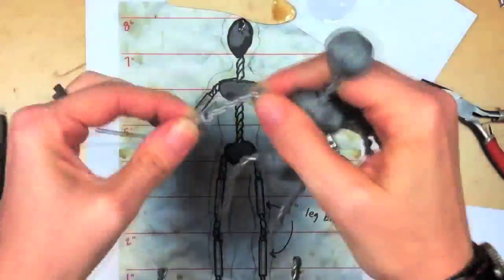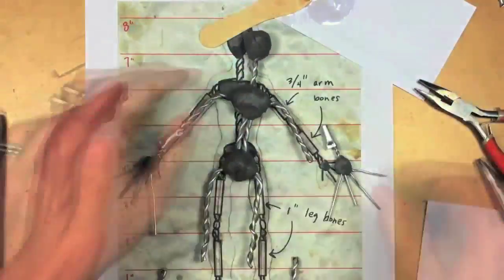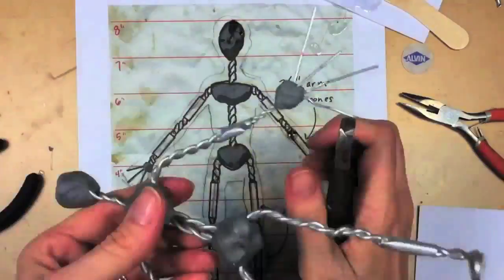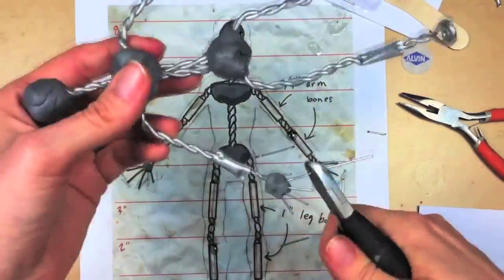You can also install bones on the bicep area of the arms and the thigh area of the legs. You can do this with tubing or epoxy putty, as I'm doing here.